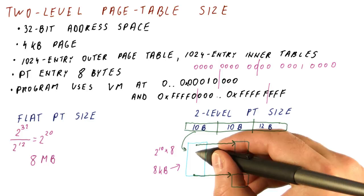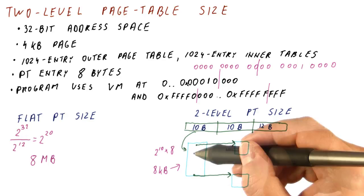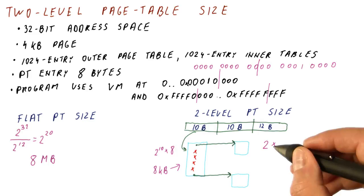Note that there are 1,024 entries here, only two of which point to inner page tables. So there is 1,022 entries that simply say nothing. So we have two inner page tables times what's the size of one of them.